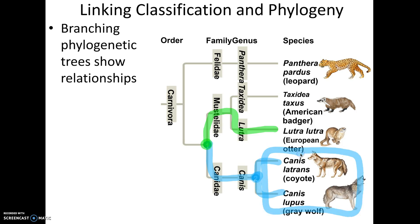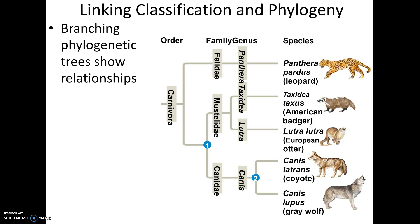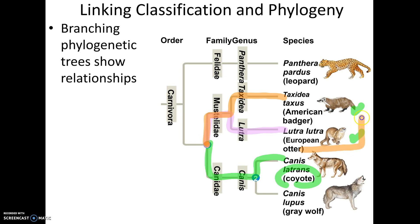Here's a trick question: is the coyote more closely related to the otter or the badger? A lot of times people look at the tree and say the otter is closer in the picture. But it doesn't matter, because technically this could be flip-flopped. What you need to do is track back to their most common ancestor. The coyote meets the otter at point one, and it meets the badger also at point one — so the coyote is equally related to the otter and the badger. Don't look at top-to-bottom order; track back to the common branch.